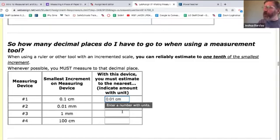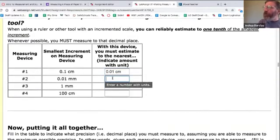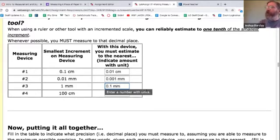How about this one right here? 0.01 millimeters. What could I estimate to? Super easy, you guys. 0.001, and it's in millimeters. It's one-tenth of that. If it's one millimeter, we can estimate to 0.1 millimeter. You can always estimate to the nearest tenth of whatever the marks are.